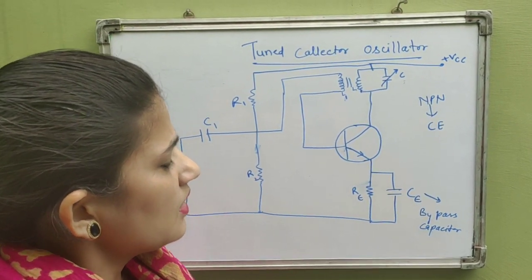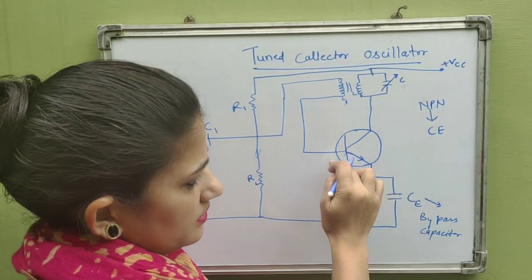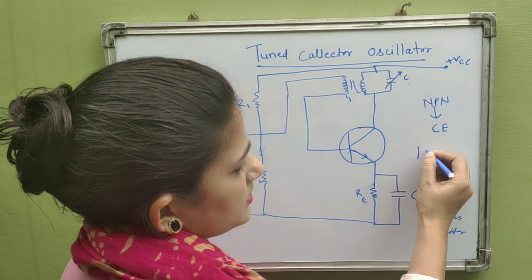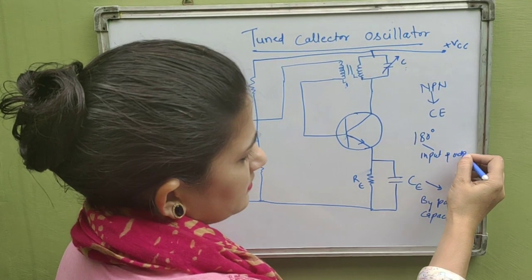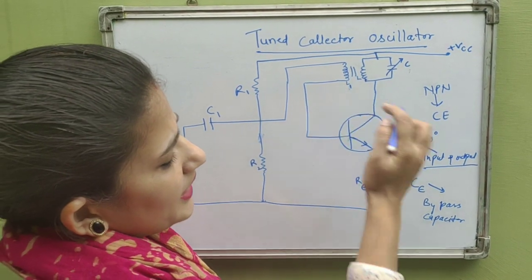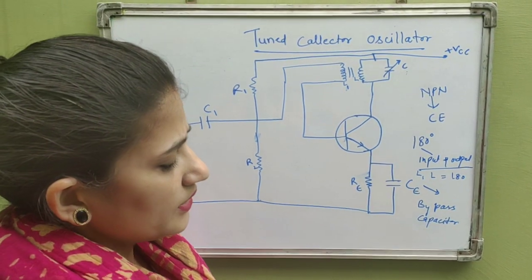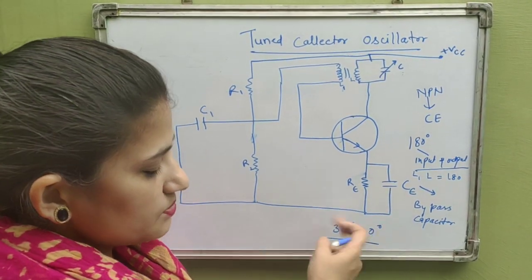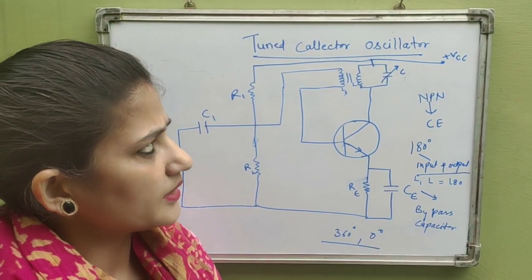The induced EMF is positive, meaning the feedback is positive. This is because the common emitter configuration produces a phase difference of 180° between input and output, and the mutual coupling between L and L1 adds another 180° phase shift. Adding the two gives 360°, which is equivalent to 0°, confirming positive feedback in this circuit.